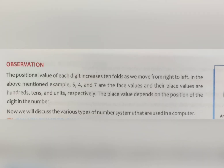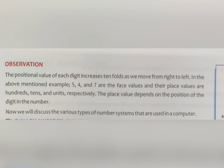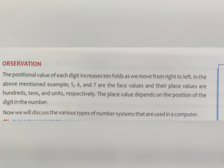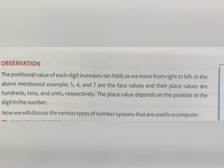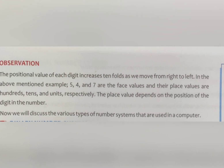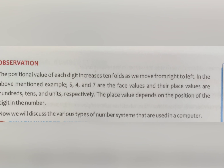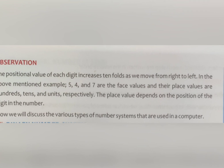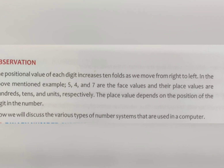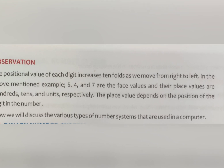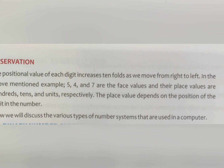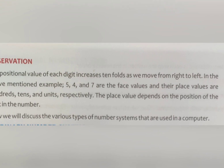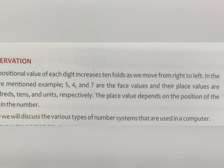The observation is that the positional value of each digit increases 10-fold as we move from right to left. In the above example, 5, 4, and 7 are the face values at the hundreds, tens, and units places respectively. The place value depends on the position of the digit — for example, 4 is at the tens place so we multiply by 10, and 5 is at the hundreds place so we multiply by 10 to the power 2.